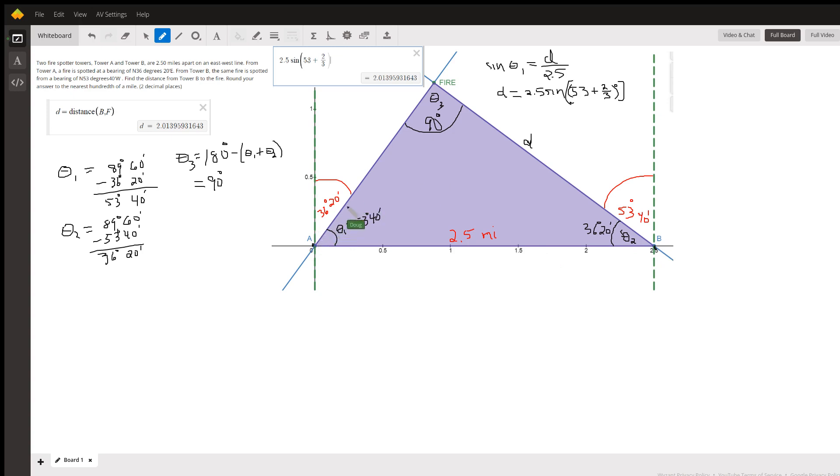The bearing of the fire from tower A is 36 degrees 20 minutes, north 36 degrees 20 minutes east, which means we can find this angle right here by subtracting from 90, which I've done right here.